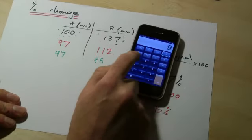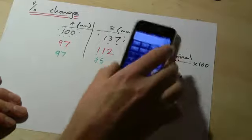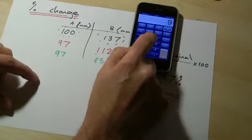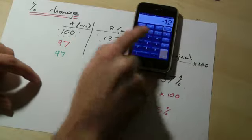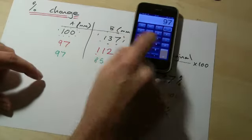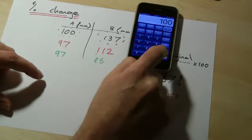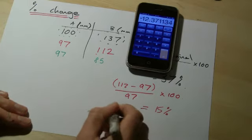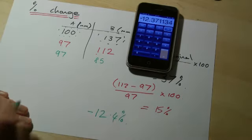So 97, oh sorry, my final 85 minus 97, equals, and notice now I'm getting a negative number, and that's fine. Divided by 97, multiply up to get out a percentage. I've now got a negative value, minus 12.4%, if I round it off.